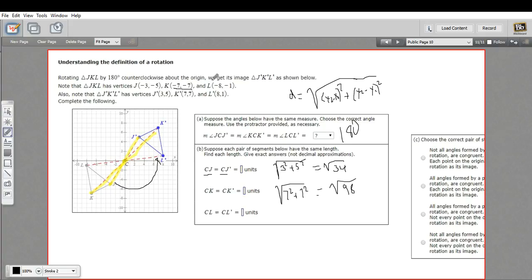And L is at 8, 1. So that's going to be 8 squared plus 1 squared. So that is the square root of 65.